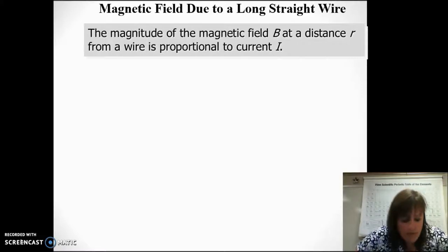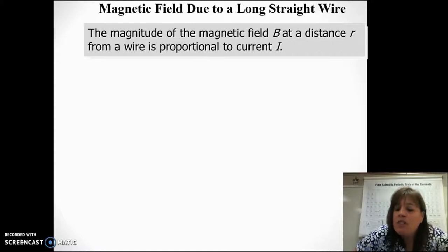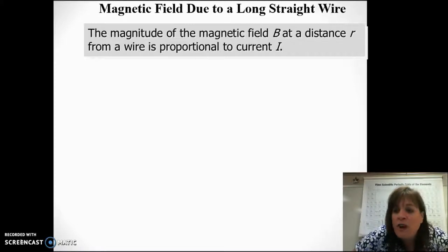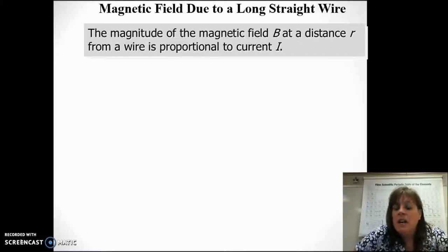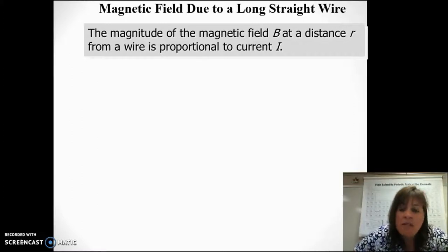What Biot and Savart found was that the magnitude of the magnetic field was proportional to the distance — how far you are from the source of magnetism — and it was directly proportional to the current running through the wire. Kind of sounds similar to electric fields, right, where they're a function of distance and charge. Similar idea. Remember, fields are a property of space.